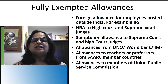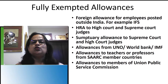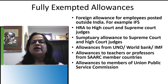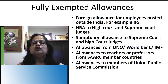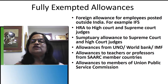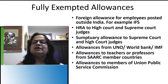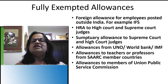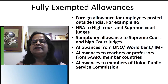The first category is fully exempted allowances. First, foreign allowances for employees posted outside India — for example, IFS officers working as ambassadors in other countries. Their allowances will be completely exempted. Second, house rent allowances given to High Court and Supreme Court judges are fully exempted.